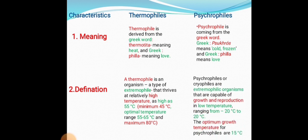Psychrophiles, also called cryophiles, are extremophilic organisms capable of growth and reproduction at low temperatures ranging from minus 20 degrees centigrade to 20 degrees centigrade. The optimum temperature for psychrophiles is 15 degrees centigrade.